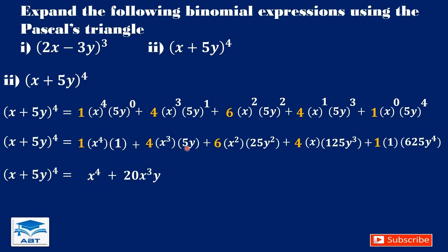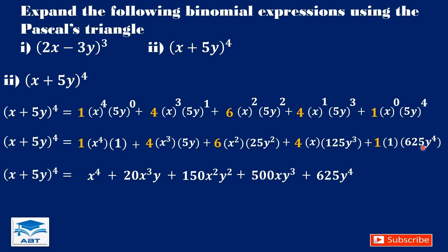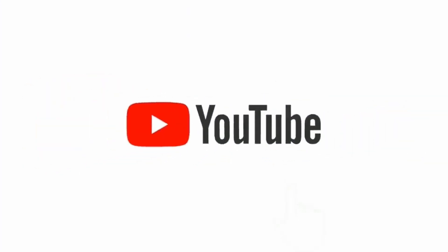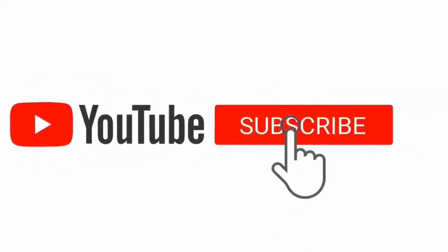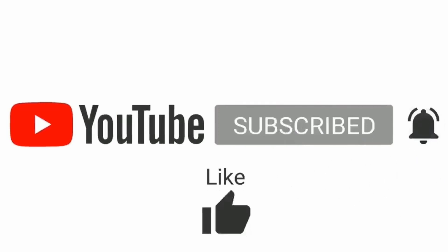And 4 times 5 is 20, giving 20x³y. Then 6 times 25 is 150x²y². And 4 times 125 is 500xy³. And here we have 625y to the exponent 4.